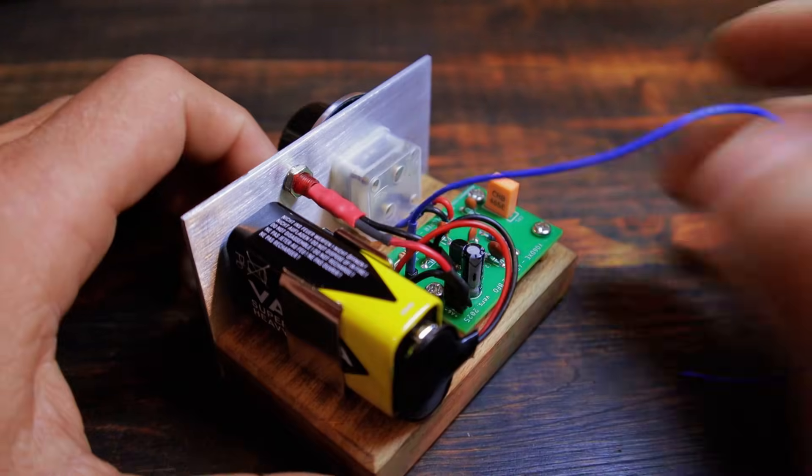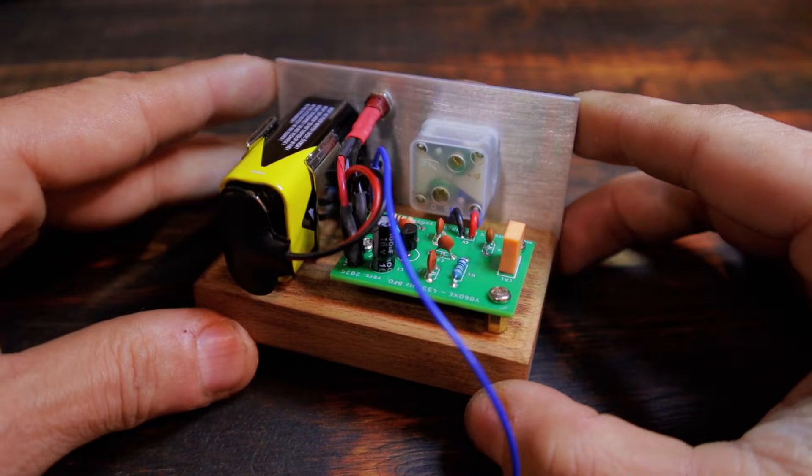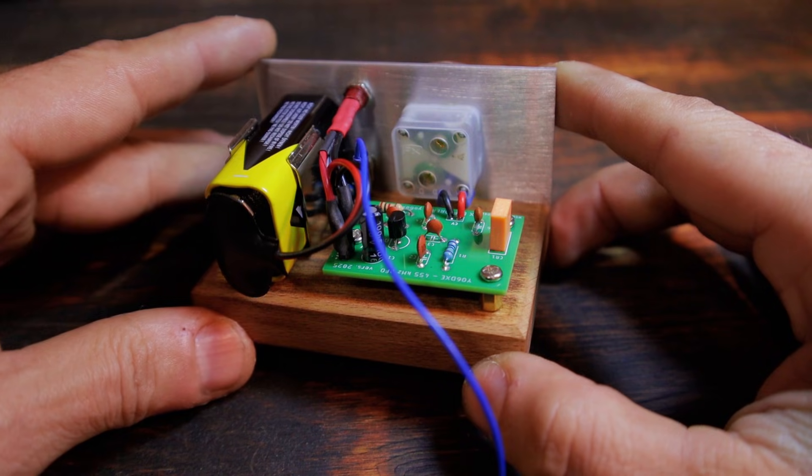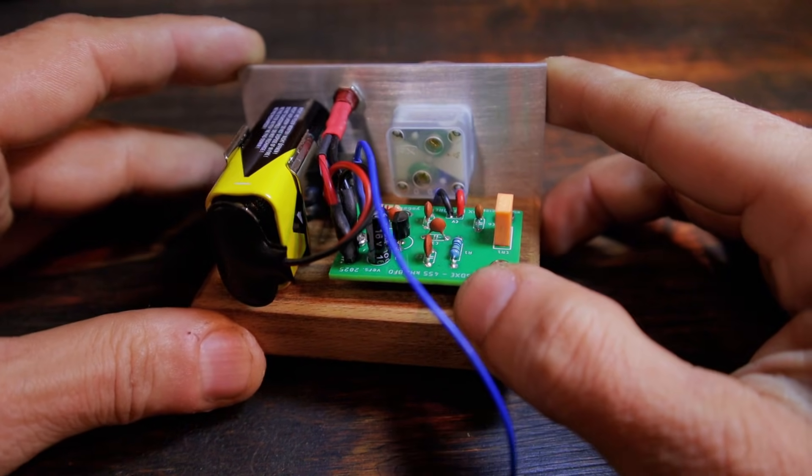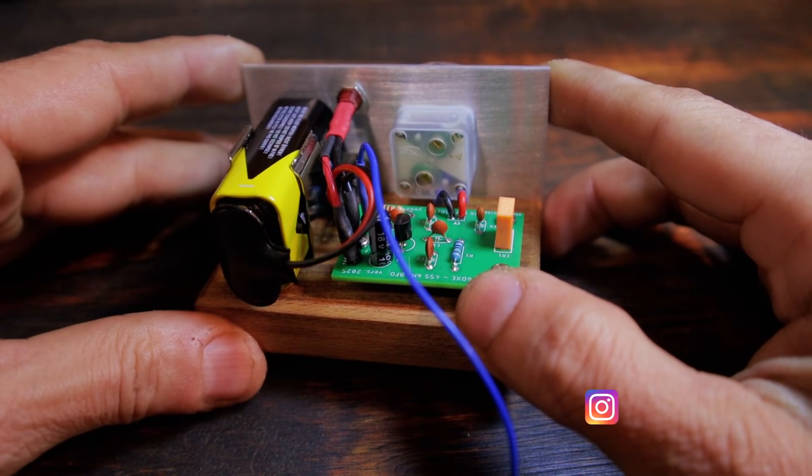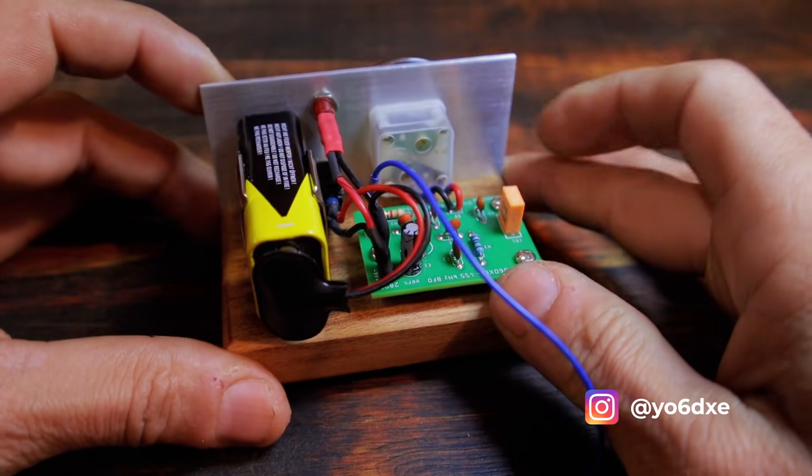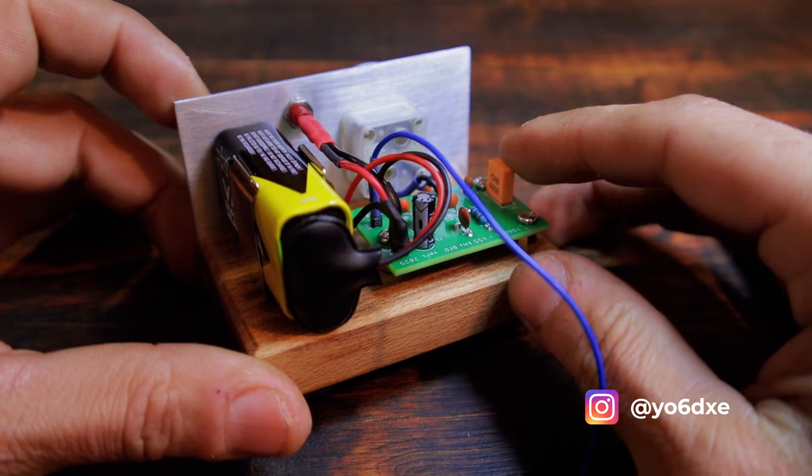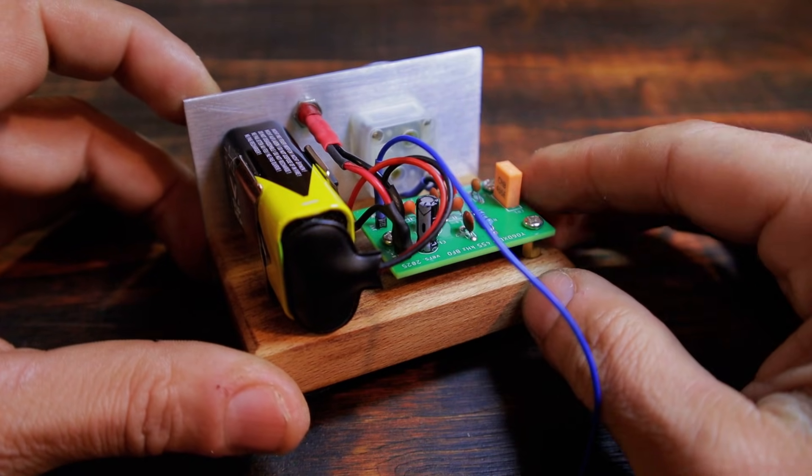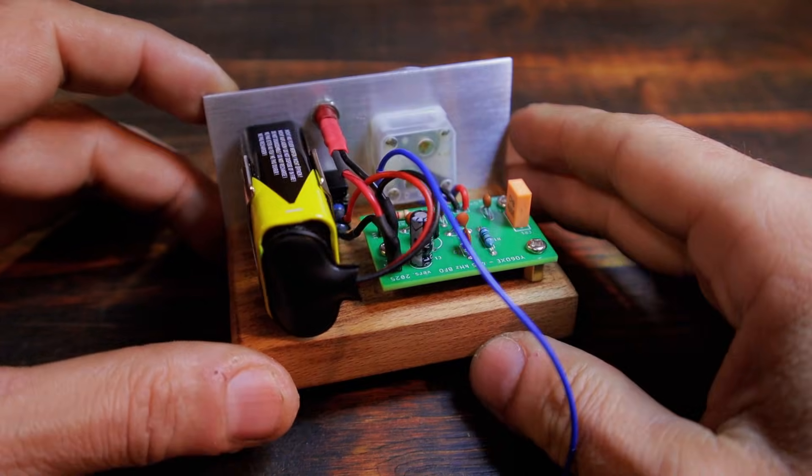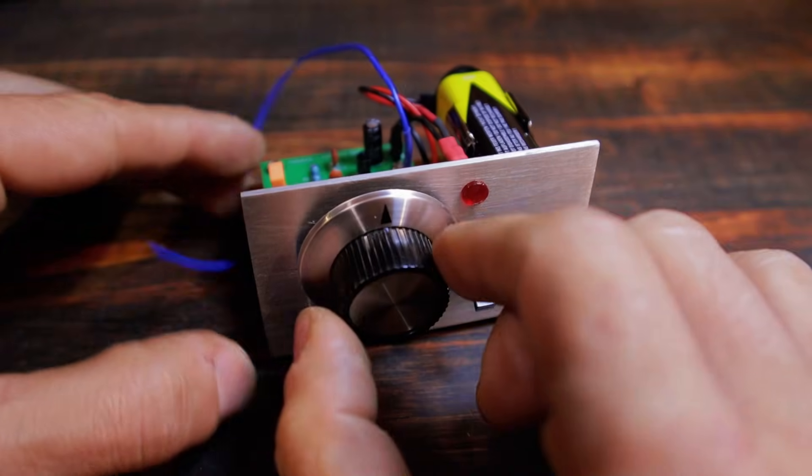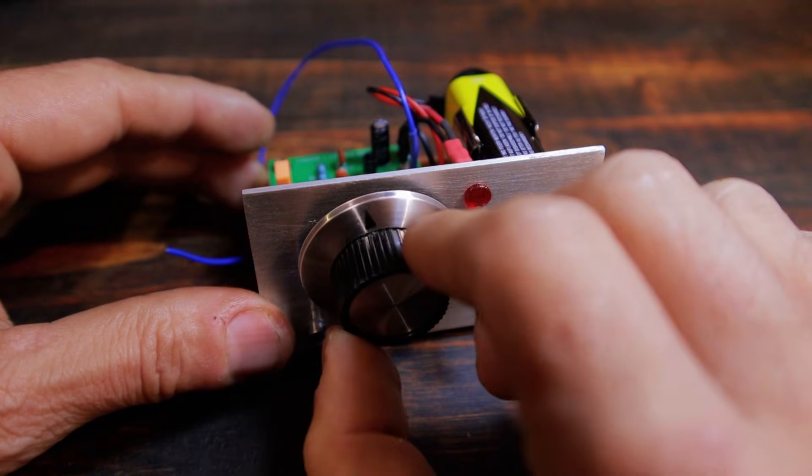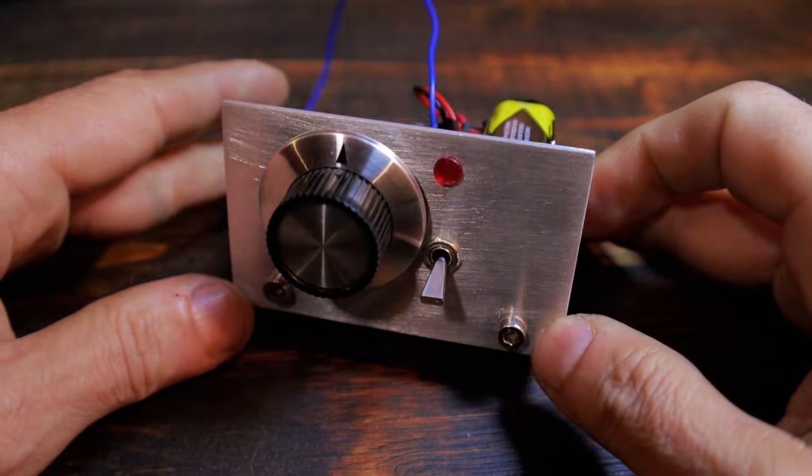This beat frequency oscillator will allow us to listen to CW and SSB signals which most of the older AM radio receivers are not capable of. Now the receiver should have the intermediate frequency of 455 kilohertz which used to be a standard in the older radio receivers, just because our oscillator resonates on 455 kilohertz. Of course the frequency is slightly adjustable to our own preferences, but we'll talk about this a little bit later in the video.